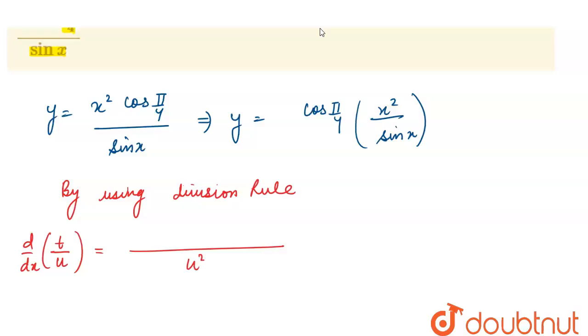So now write denominator as it is, that is u, and differentiate the numerator, that is dt/dx, minus write the numerator as it is, t, and differentiate the denominator, that is du/dx.